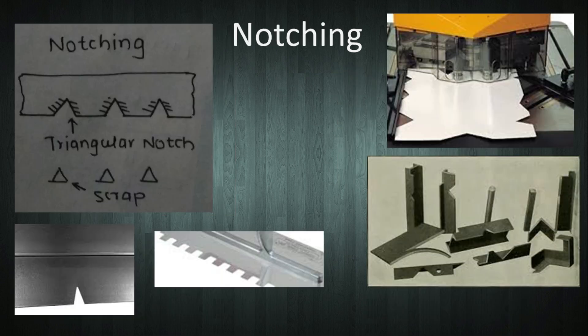The next operation is notching. In this operation, material is removed from the edge of the sheet metal as shown in the figure. The shape of notch varies as per requirement, but basically the notch is at the edge. A variety of notches can be seen in the slide.